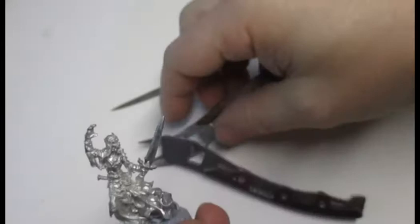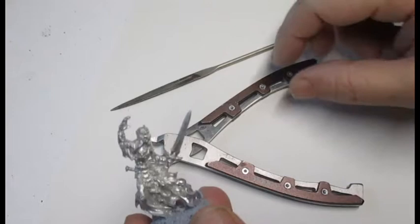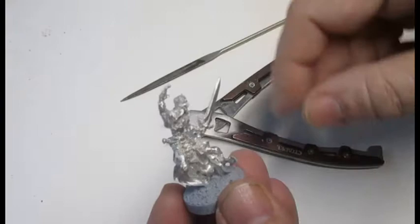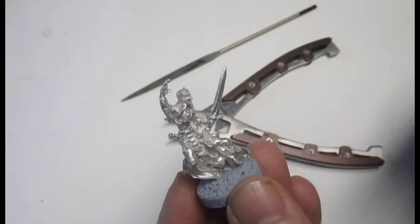You can buy any snips for the job. You can get specialized ones from Games Workshop, but you can go to your local hardware store and get these little snips as well. Plus you can get the little files from the local hardware store if you take a little look around.